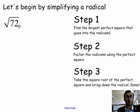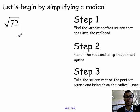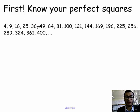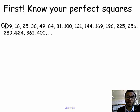The reason you have to know your perfect squares is because we use them to simplify radicals. Let's begin by simplifying radical 72. The first step is to find the largest perfect square that goes into the radicand — the radicand is whatever is under the radical, in this case 72. Going back to our list, the largest perfect square that goes into 72 is 36.